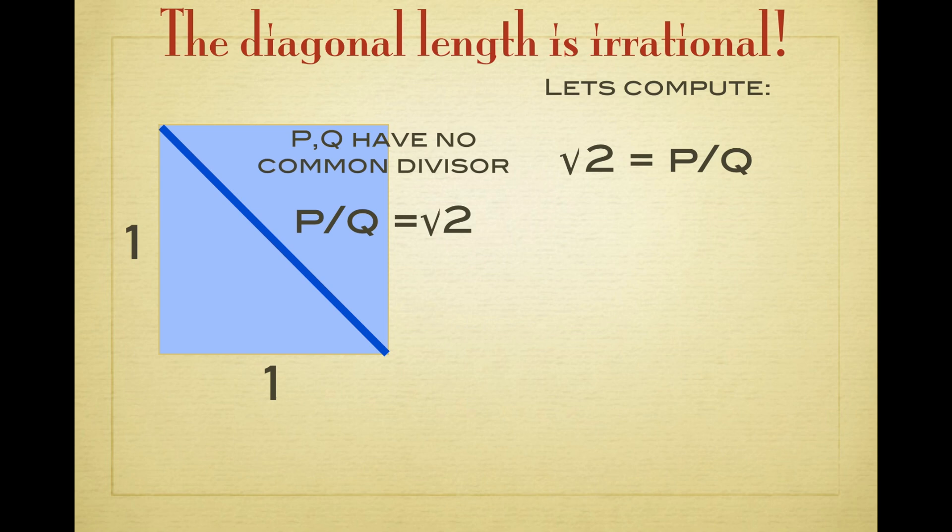If the square root of 2 is p over q, we can multiply this equation by q and get q times square root of 2 is p, and square both sides to get 2q squared is p squared.